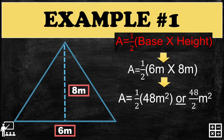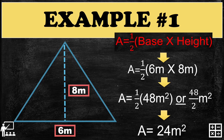This gives us one half times 48 meters squared, or 48 divided by 2 meters squared. To get 48, we multiply 6 times 8, then divide by 2. 48 divided by 2 gives you 24 meters squared. So the area of this triangle is 24 meters squared.